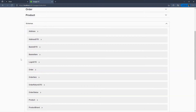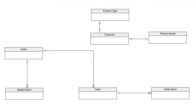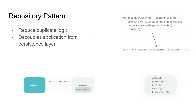In terms of the database relationship schema, a user can have many orders, each order can have many items, and each user can also add many items to their cart. For products, each product can only have one product type and one product brand, so it's a one-to-one relationship between product and product type, and between product and product brand.